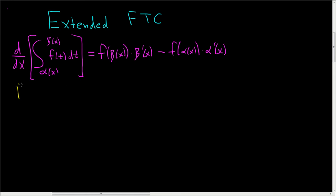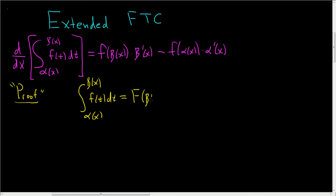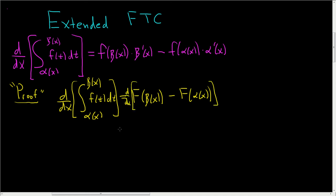Let's give a quick proof sketch — I'll put 'proof' in quotes. Write down the definite integral of f of t with respect to t from alpha of x to beta of x. This equals big F of beta of x minus big F of alpha of x, where big F is an antiderivative of little f. Taking the derivative of both sides with respect to x, we get big F prime evaluated at beta of x times beta prime of x, by the chain rule, minus big F prime of alpha of x times alpha prime of x.